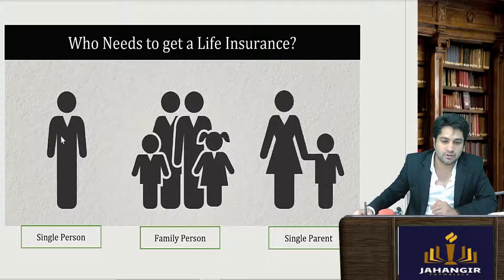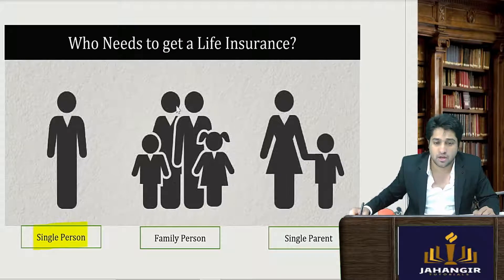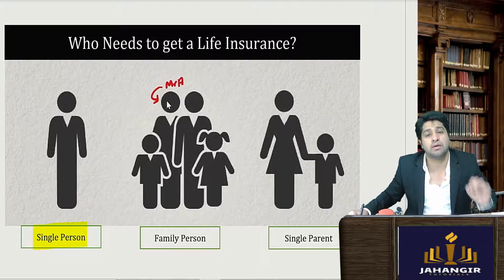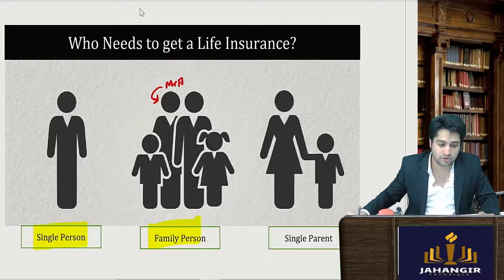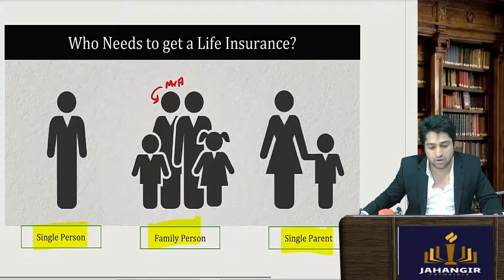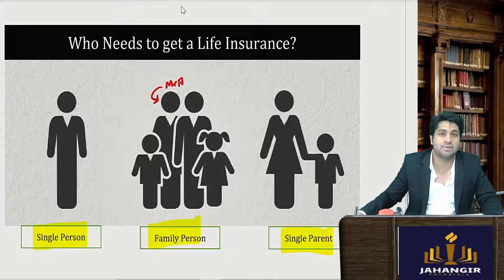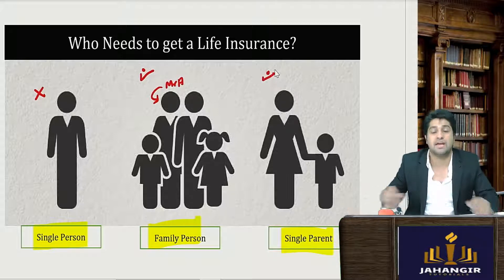Consider three kinds of people: a single person with no dependents — does he require a life insurance policy? Then there is Mr. A, a sole earning member of the family who has taken up a loan to provide for his family and nobody else is earning. And the third category is a single parent taking care of her child. In these three cases, who requires life insurance? The single person does not, but Mr. A definitely requires it, and the single parent will also require a life insurance policy.